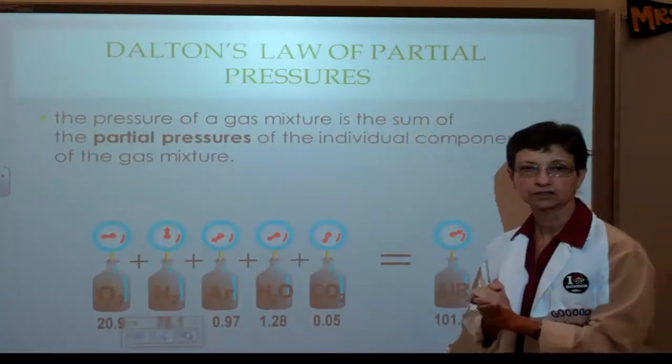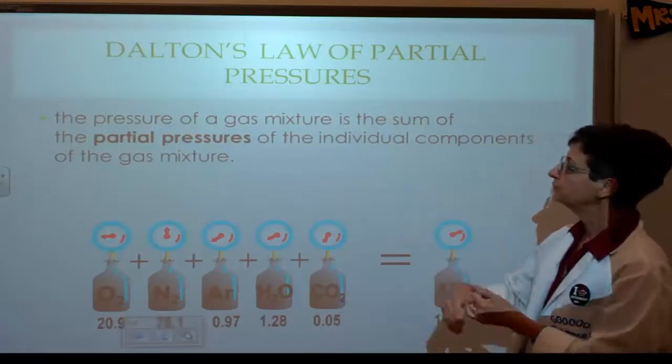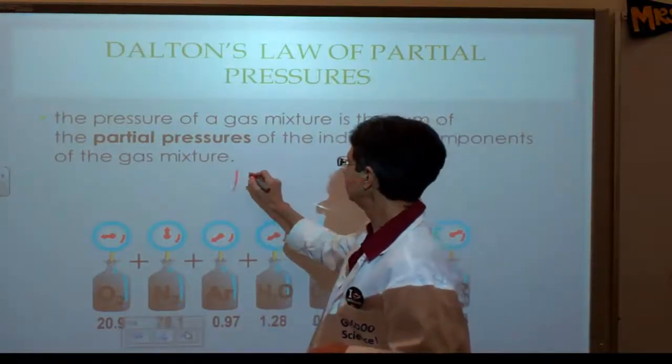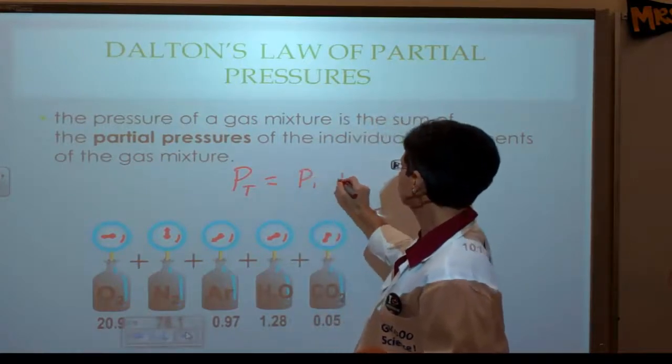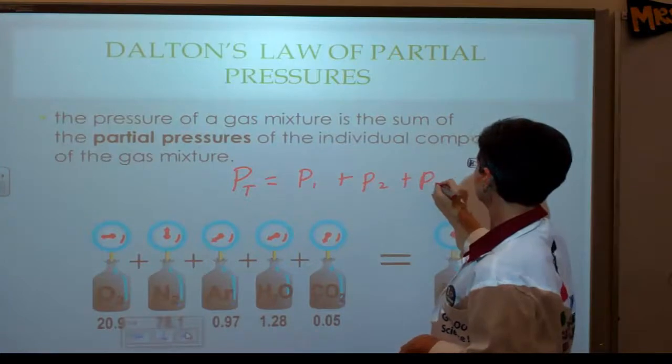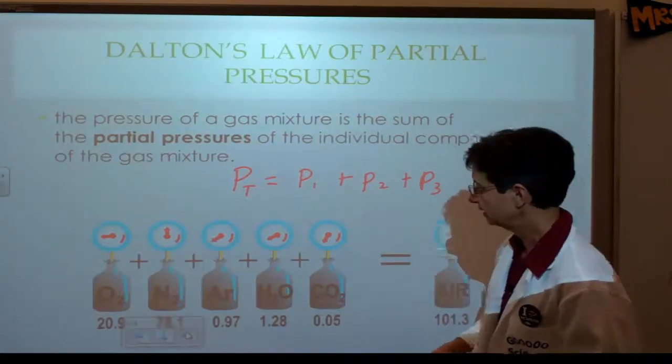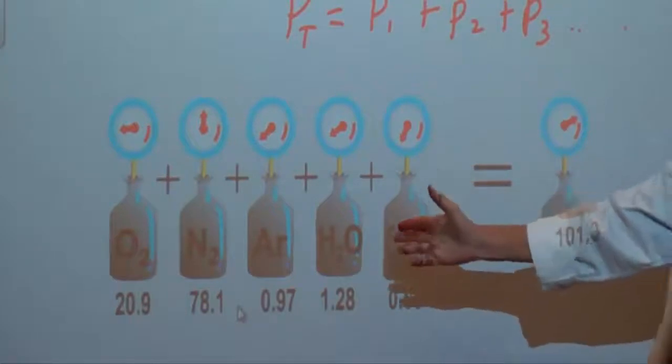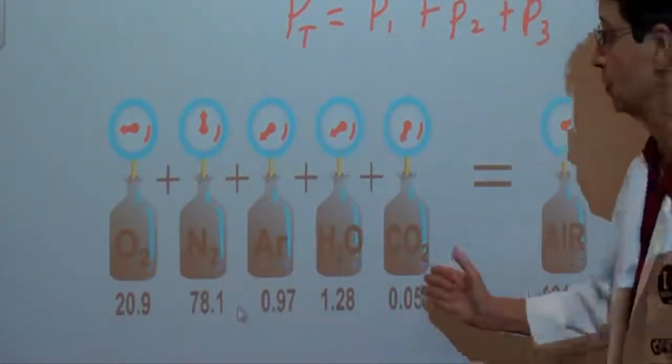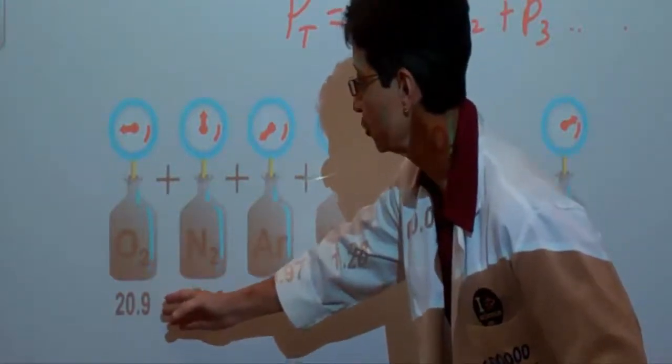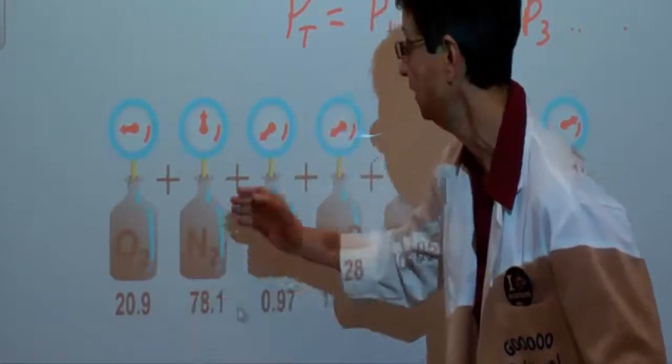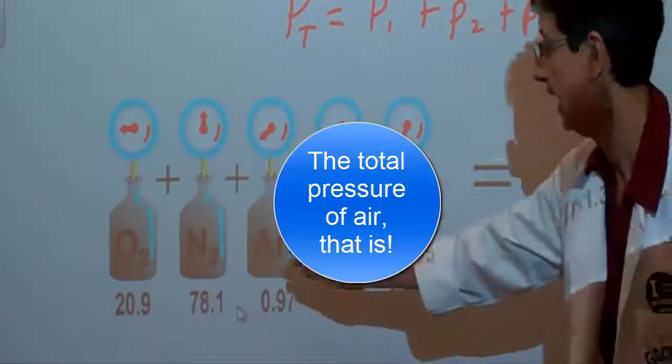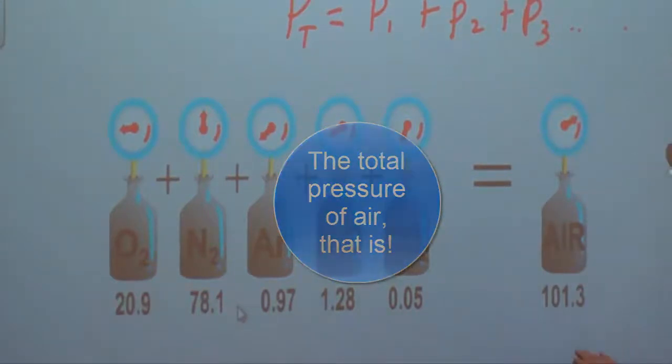Finally, we're going to briefly talk about Dalton's law, and we'll do more problems later on. The pressure of a gas mixture is the sum of the partial pressures, so therefore I'm going to say P total equals pressure 1 plus pressure 2 plus pressure 3, and so on and so forth, as many pressures as I have. And to illustrate that, we see that air is composed of all of these gases, therefore if the pressure of oxygen is 20.9, that would be the partial pressure 1, nitrogen partial pressure 2, argon partial pressure 3, and so on and so forth. I add them all up, and I get the total pressure of air.